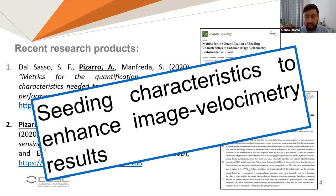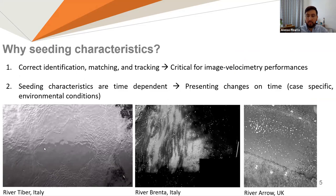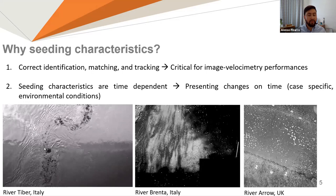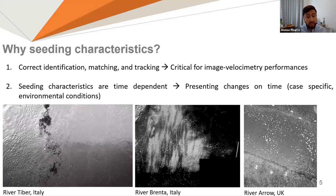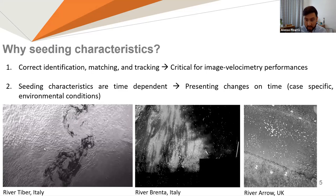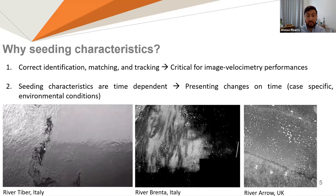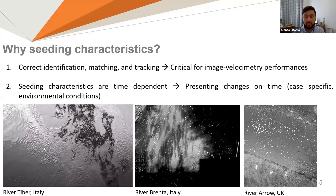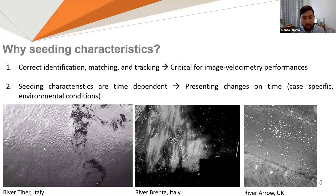This manuscript focuses on the shooting characteristics to enhance image velocimetry results. Why shooting characteristics? Due to two main reasons. First, features are essential for image velocimetry analysis — without them, it's not possible to run the algorithms and therefore no velocity calculation can be done. Secondly, these seeding characteristics — for example, natural patterns flowing with the flow or artificial tracers — are time-dependent, presenting changes over time. These dynamics rely on case-specific environmental conditions.